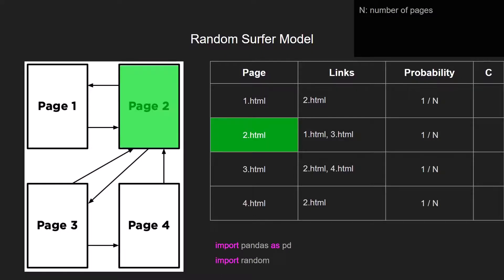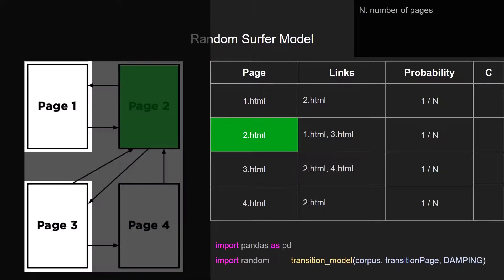So let's start by random. Assuming that we pick page number 2, we go in this and we check the links. So we go to the transition model function which accepts a corpus, a transition page (in this case page number 2), and a damping factor which is already defined in the assignment. In this case we have two links, page number 1 and page number 3. And the probability of those pages will be increased because now that we are in page 2, the probability of being in the following pages are increased because they are linked. So we use the following formula as you can see in the screen, and we can calculate the probability depending on that.